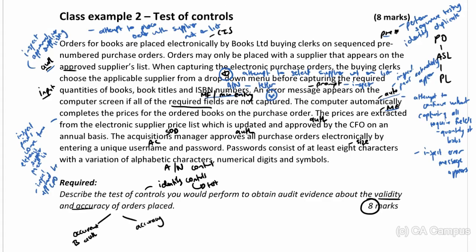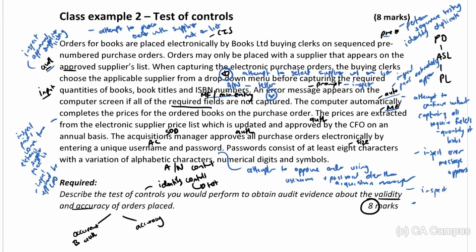The acquisitions manager approves all purchase orders electronically using a username and password. We can attempt to approve an order using a username and password other than that of the acquisitions manager — and we should not be allowed to. We can also inspect logs or exception reports of attempts to authorize orders not made by the acquisitions manager.